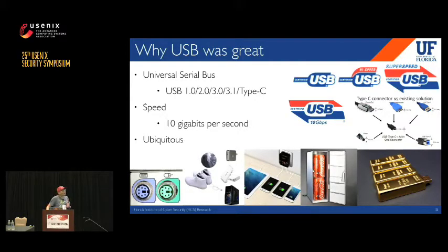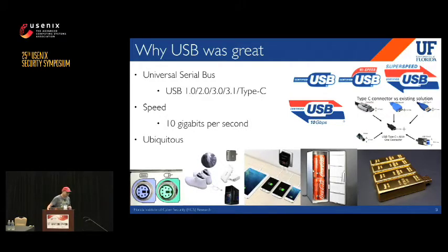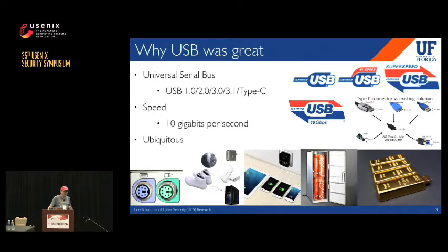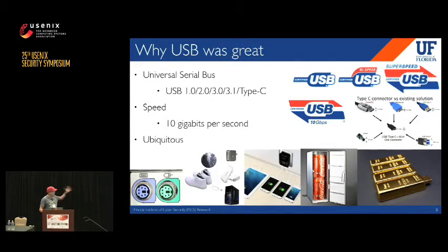In USB 3.1, the speed can be up to 10 gigabits per second, which is fast enough to support most external storage devices and even GPU cards. USB is truly ubiquitous. Virtually everyone can find USB ports on every computer, including desktops, servers, routers, and switches. And essentially, there are tons of different USB devices — USB shoes, USB fridges. Everyone just loves USB.